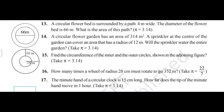We are doing Exercise 11.3, question number 14. A circular flower garden has an area of 314 meter square, and a sprinkler at the center of the garden can cover an area that has a radius of 12 meter. We need to find whether the sprinkler will water the entire garden or not. First we will find the area covered by the sprinkler, and then decide.